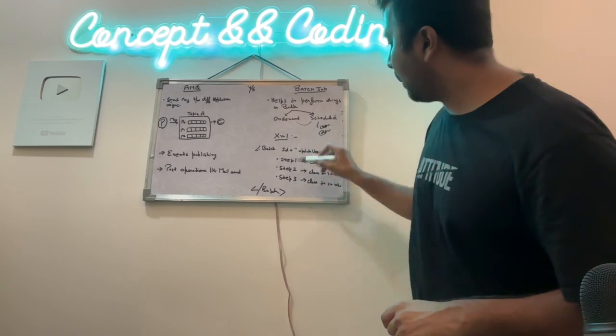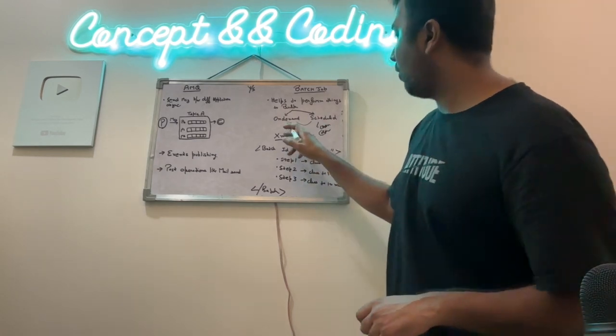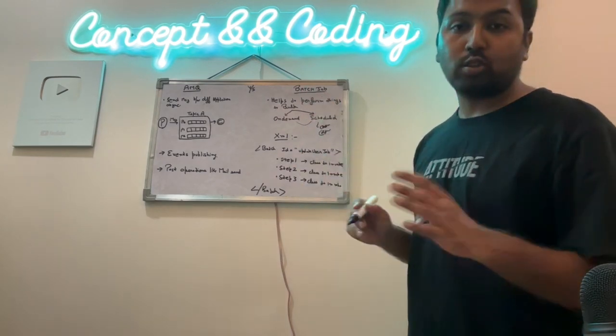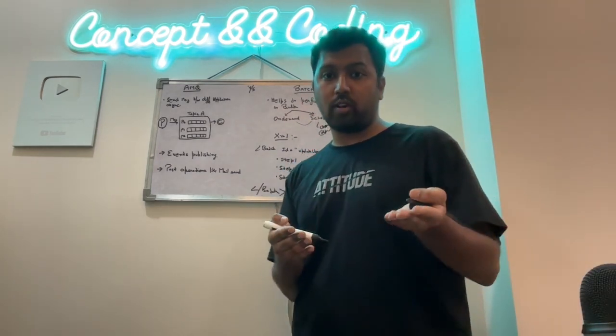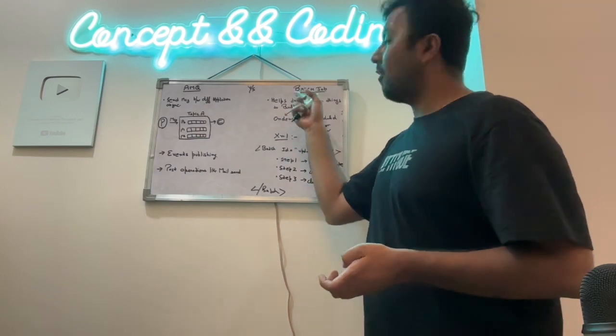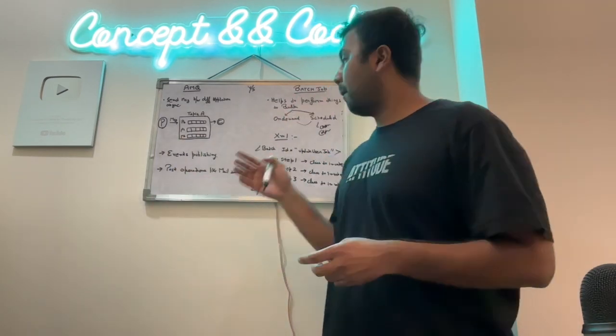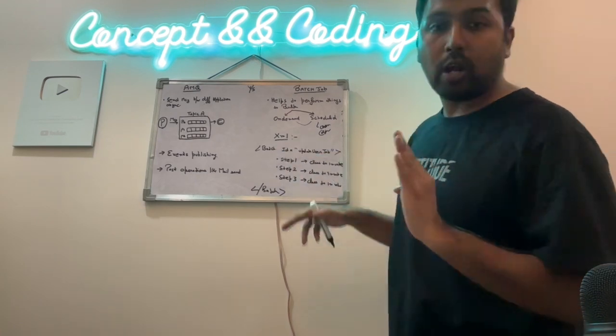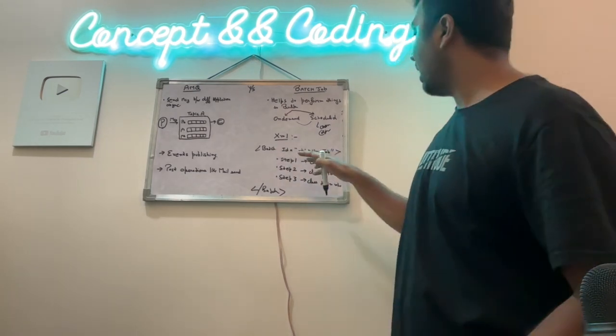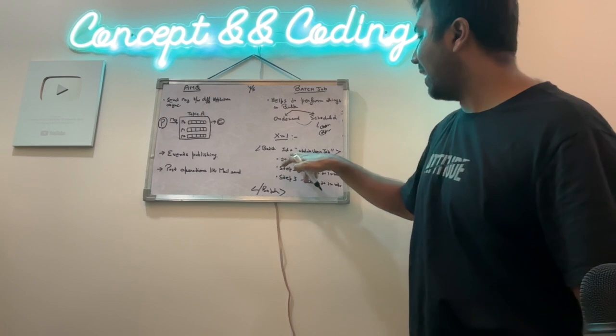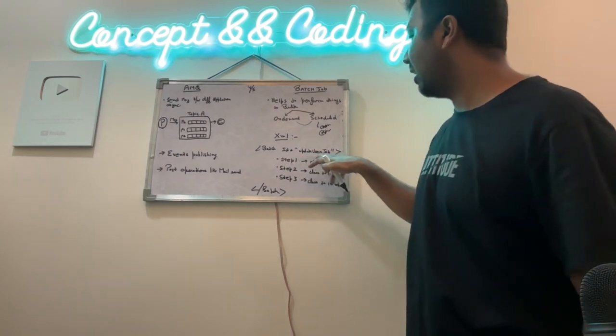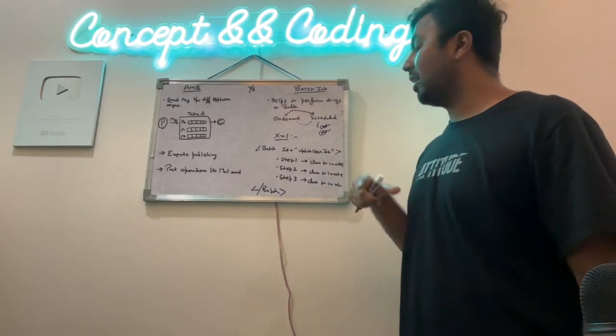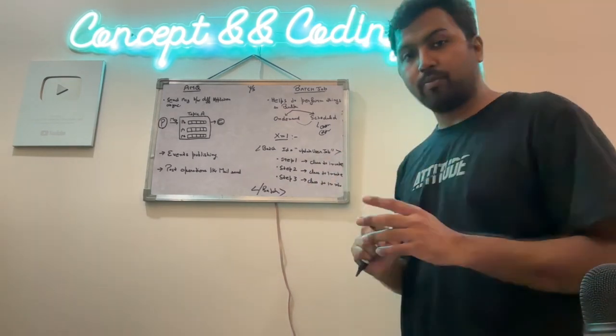So this is one simple XML file of a job which you write. So there is already a Spring Boot playlist going on in the concept and coding. I will cover spring batch in depth. But for now, just for discussion purpose, when you have to write a batch, what generally happens is you give an ID of a batch. So let's say I have given an ID, update user job. So this job is, I am writing that it has to update a user.